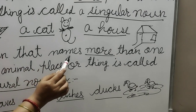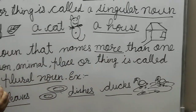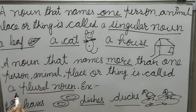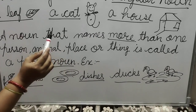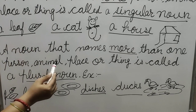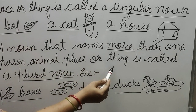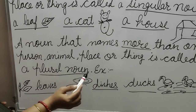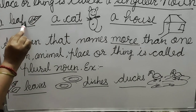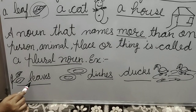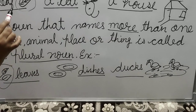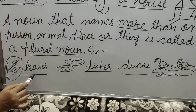A noun that means more than one person, animal, place or thing is called a plural noun. A plural noun is when we talk about more than one person, more than one animal, more than one place or more than one thing. For example, here we see a leaf — there is only one leaf. And here we see leaves, meaning more than one leaf. So leaf is a singular noun and leaves is a plural noun.